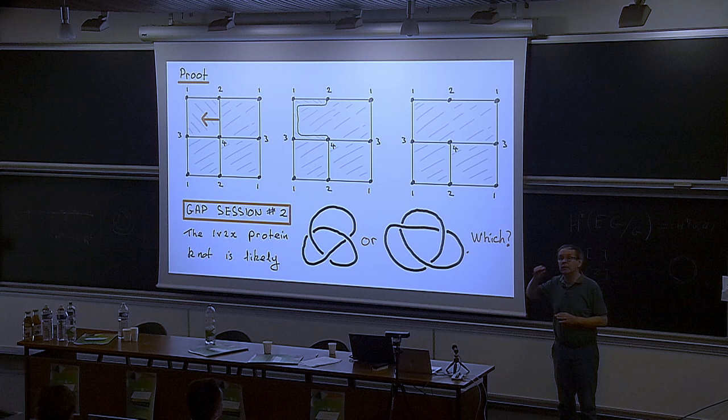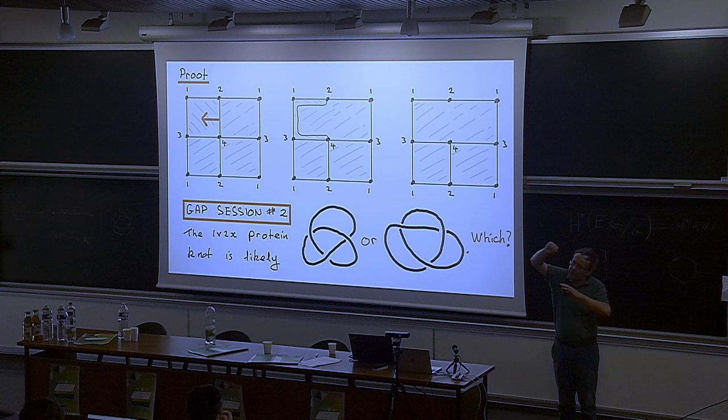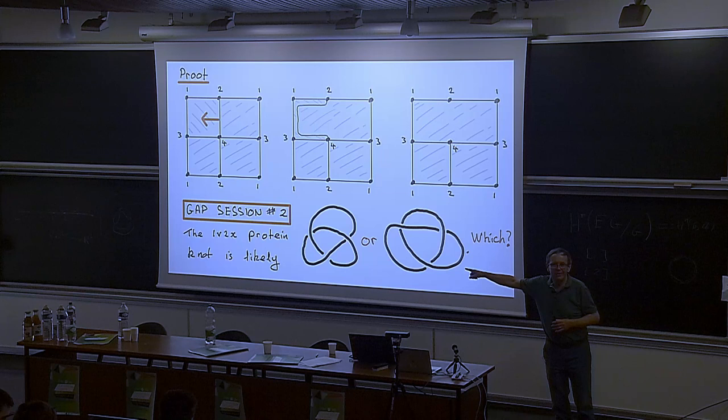You'll get a different graph every time because the graph of the protein is using Asymptote — don't ask me how Asymptote. You get a different perspective; you'll probably get the same thing but you can rotate it.